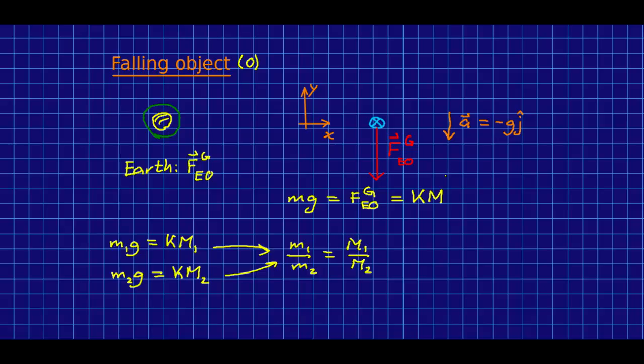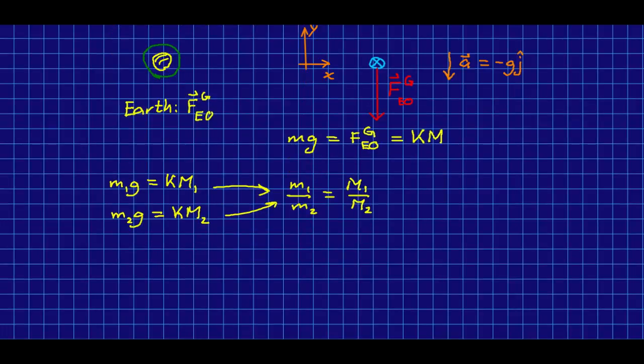What this does mean is that we have a nice simple relationship for gravitational force. The gravitational force that the Earth exerts on any object is just that object's inertia, which we can now also call its mass because we've just established it's the same thing, times the acceleration due to gravity.